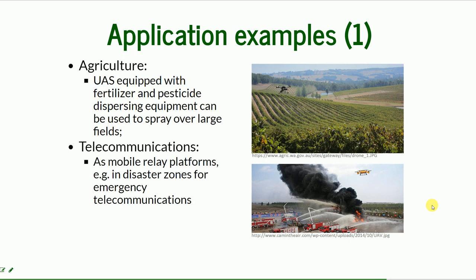In telecommunications, UAS can be used as mobile relay platforms. For example, in disaster zones or where regular transmitters have been destroyed, emergency telecommunications can be based on transmitters mounted on the drone.